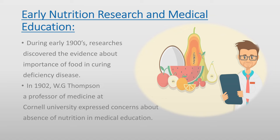Early nutrition research and medical education: during the early 1900s, researchers discovered evidence about the importance of food components in curing deficiency diseases. The very first physiologist was WG Thompson. He expressed concerns about the absence of nutrition in medical education at that time, noting that patients had not been seen through the lens of medical nutrition.